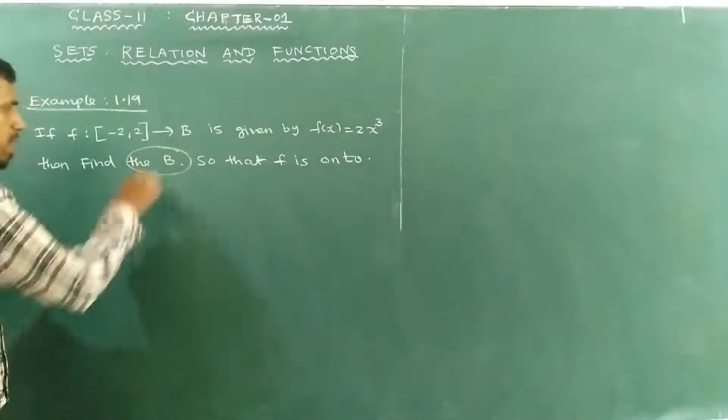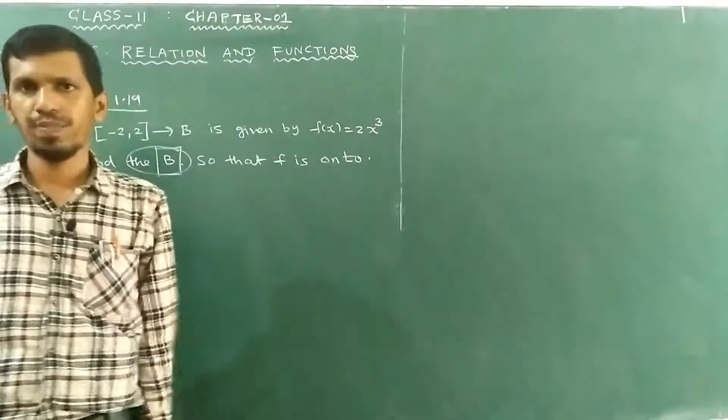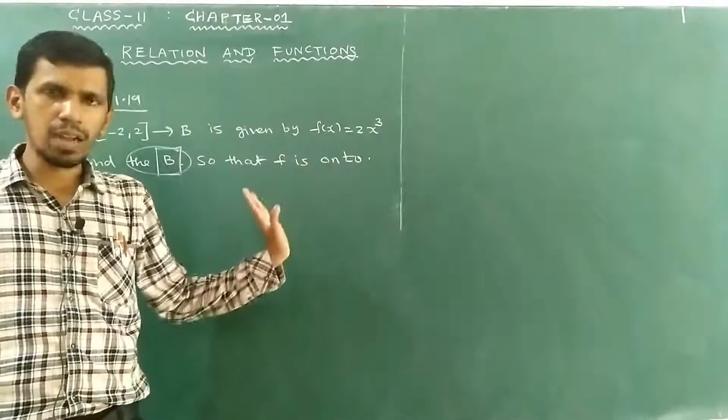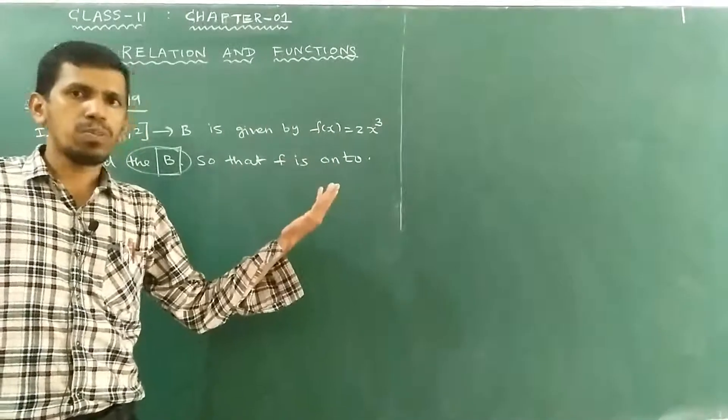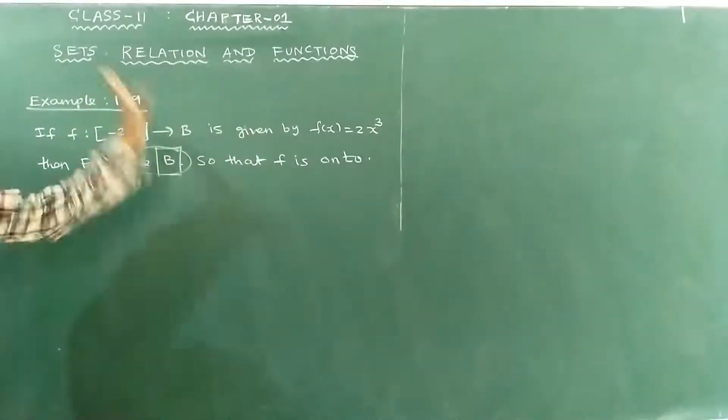Find your answer so that f is an onto function. Onto function means all images - the second set will be all images, all elements are pre-images. That's your answer.